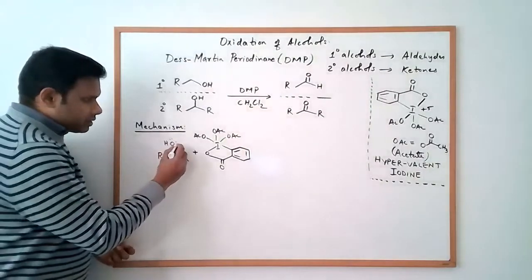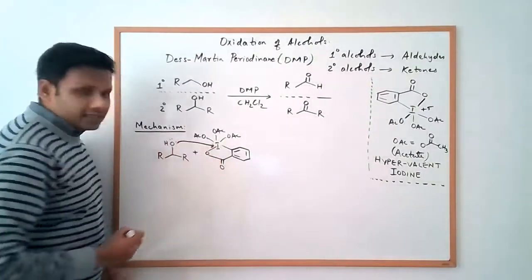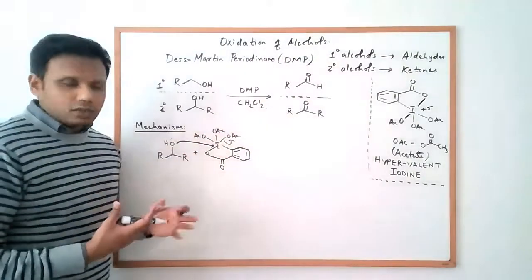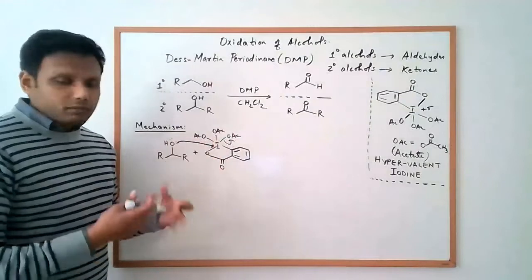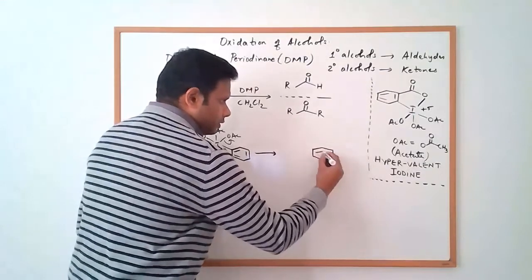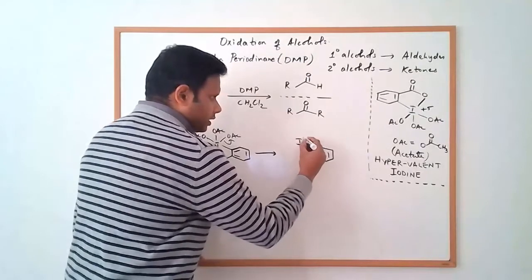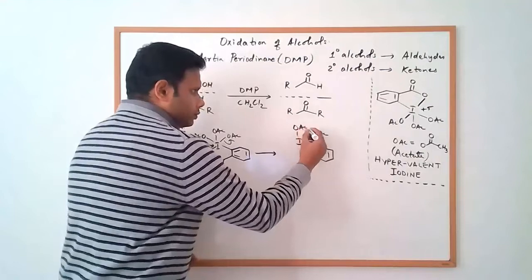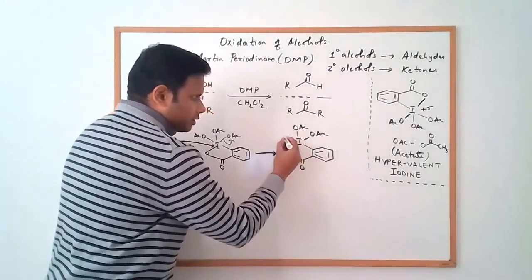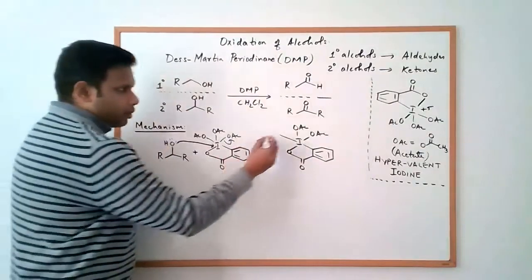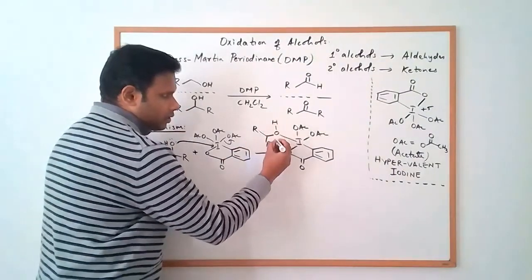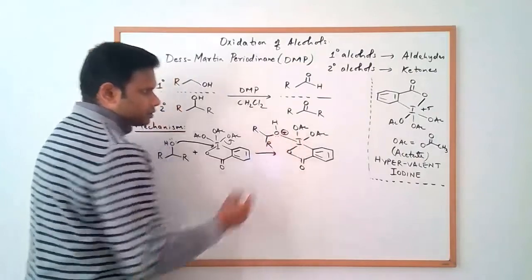the first step involves the attack of the secondary alcohol on this iodine center with the simultaneous expulsion or loss of one of these acetate groups. So there are three acetates on that iodine. One of them is lost. And this brings us to the first intermediate where we now have the iodine with two acetate groups, and the iodine is now bonded to this alcohol oxygen, which is connected to everything else. And the hydrogen is also there, and this oxygen has a positive charge.